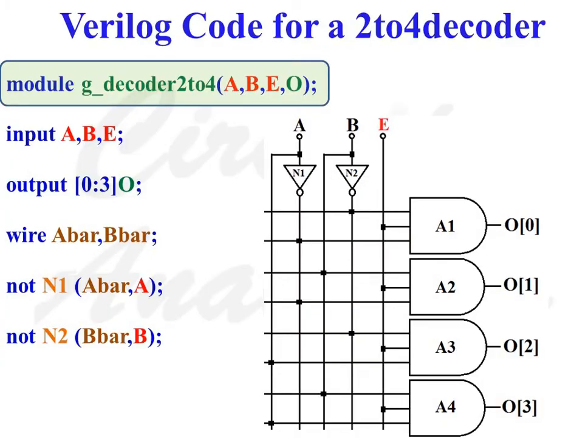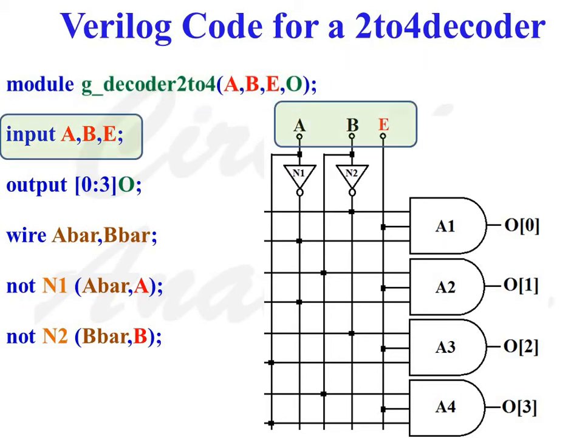Now let us discuss the Verilog code for a 2 to 4 decoder. The module declaration is: module G_decoder_2to4 (A, B, E, O); This line defines a new module named G_decoder_2to4 with 4 ports A, B, E, and O. The line 'input A, B, E;' specifies that ports A, B, and E are input ports.